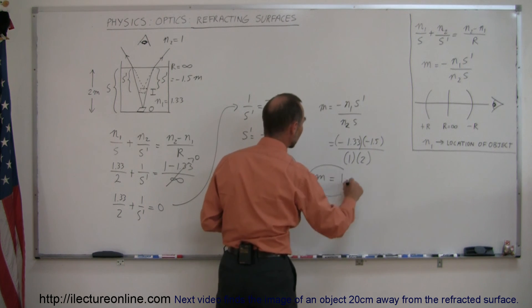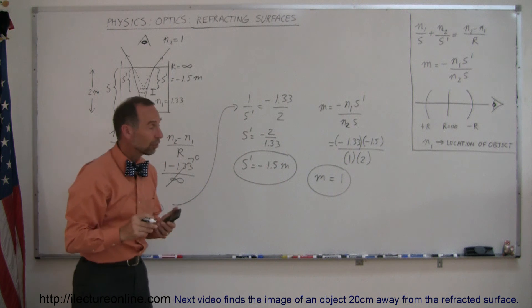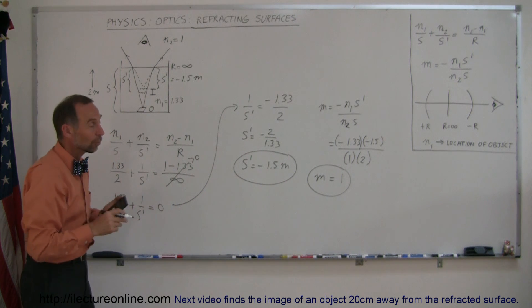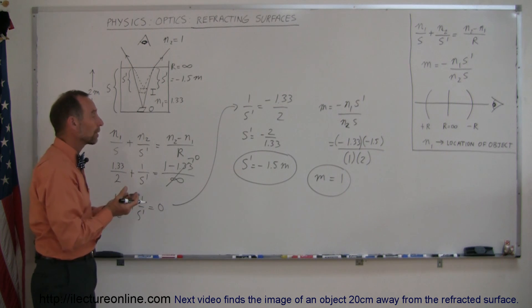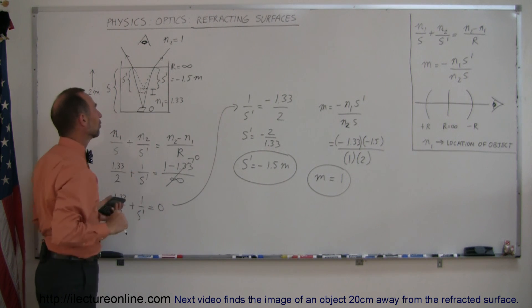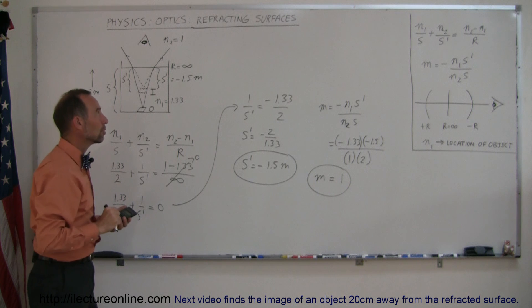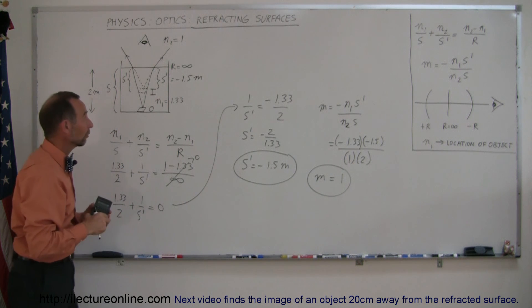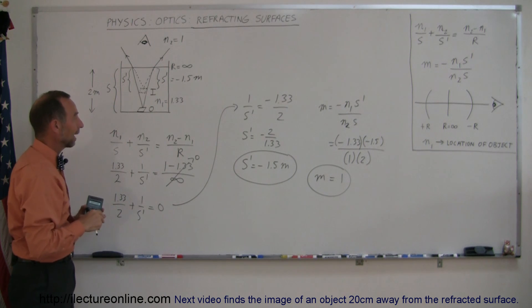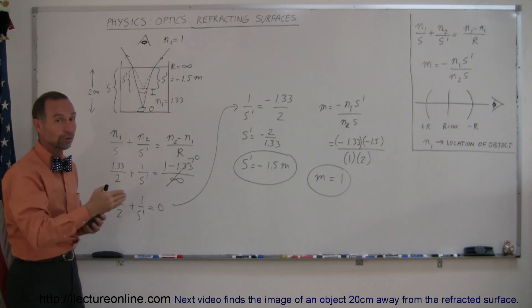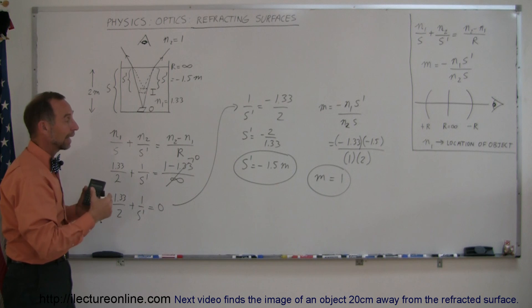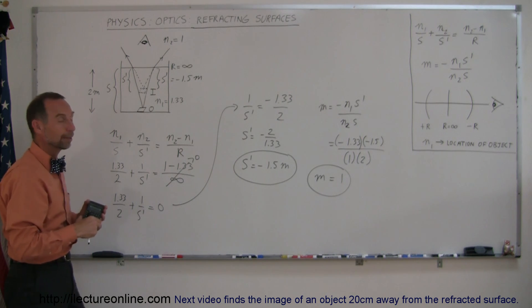This means that when you look into a pool, objects will appear to be the same size. The image of the object you're looking at will be the same size, except they will appear closer. That's how you use the equation for refracting surfaces if the surface is flat. Now we'll do some examples where the surface is not flat, bulging towards and away from the observer.